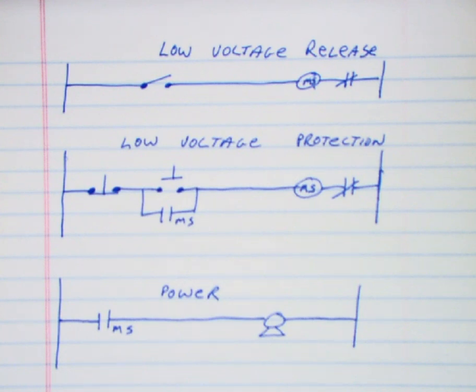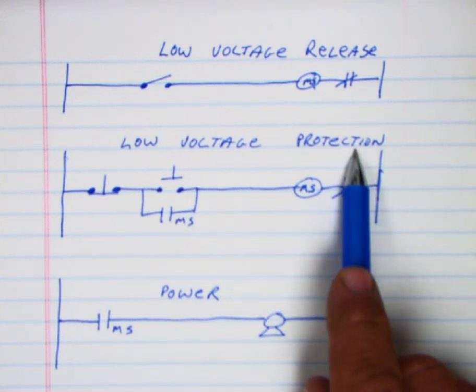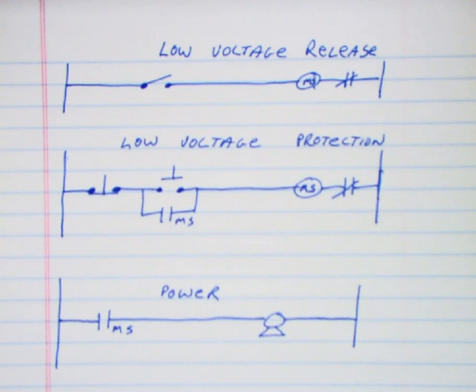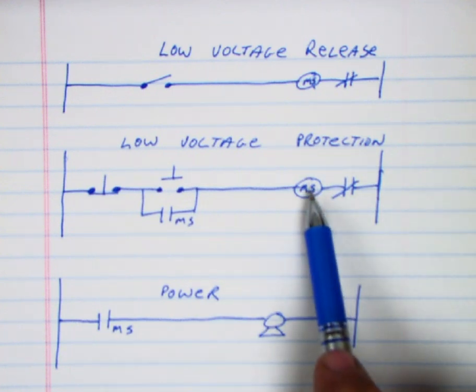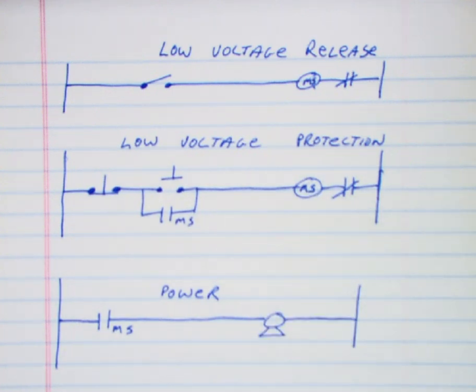The reason we do this, and the reason it's called low voltage protection, is it protects people from this motor accidentally turning back on by itself in the event of losing power or something bumping the switch, the stop switch.